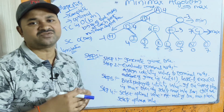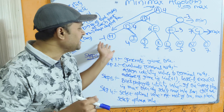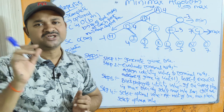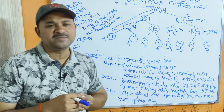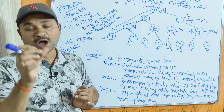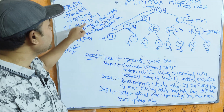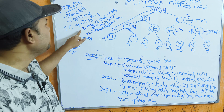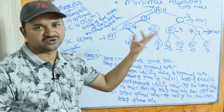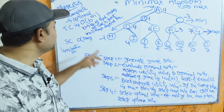Now let us see some advantages of the Minimax algorithm. First, it is complete — if the game tree has a solution, Minimax always finds it. Second, it is optimal — when multiple solutions exist, Minimax always produces the best solution. The time complexity is O(b^m), where b is the number of legal moves at each point and m is the maximum depth of the tree.